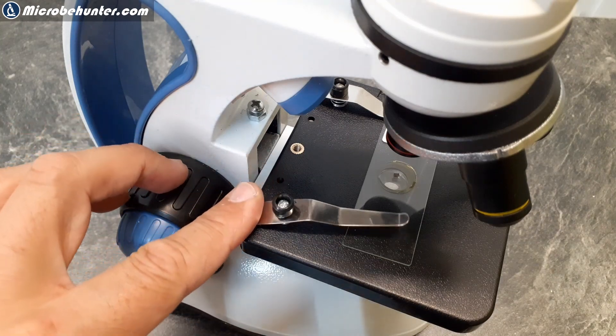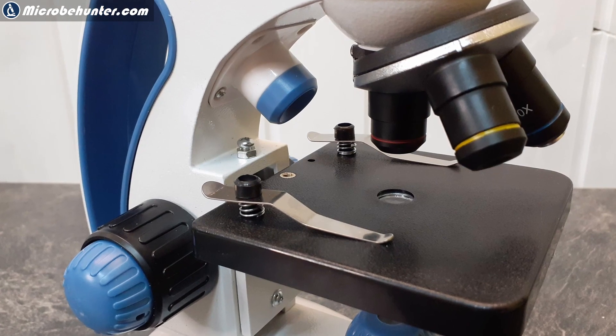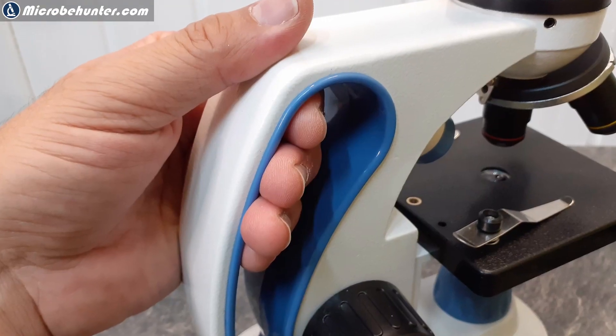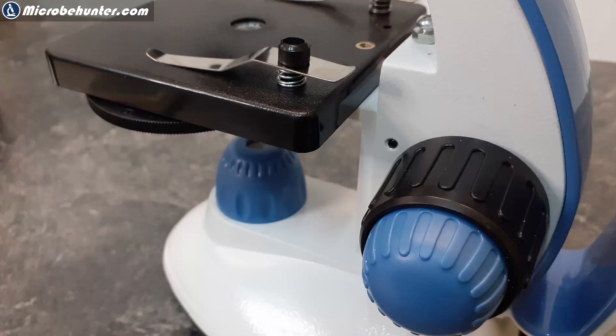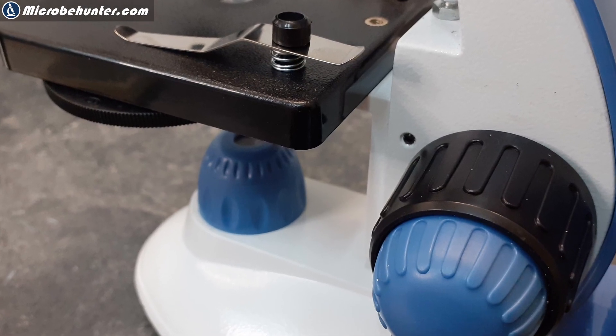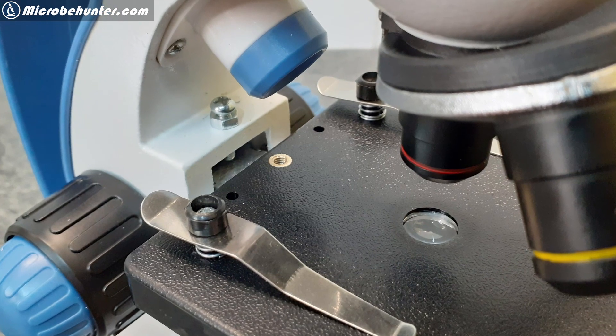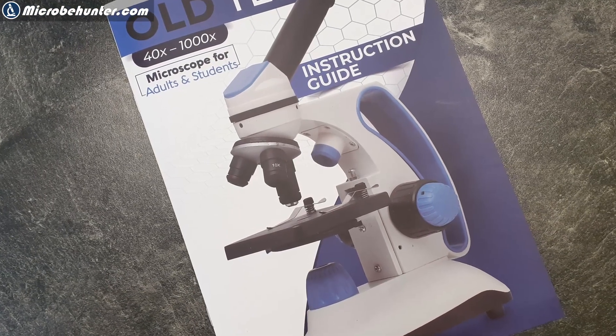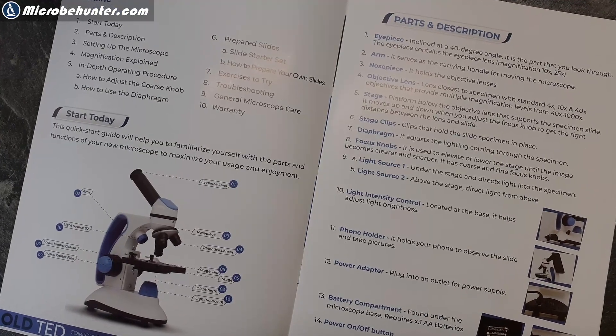There is no mechanical stage. Microscopes at this price category rarely have one. But there are stage clips that hold the microscope slide in place. And this is how it looks like. You can also see that there is a small lens in the center of the stage. And here on the back, there is also a grip which allows you to carry the microscope. And here you can again see the coarse and fine focus knob. And here the lamp, which allows you to look at specimens at a low magnification with light from the top.